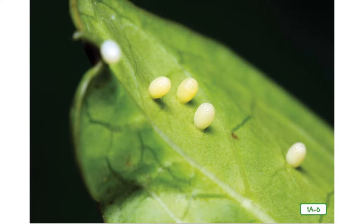Many insects depend on plants to live. Many insects eat plants, and some lay their eggs on plants. The plant on which an insect lays its eggs, and which provides food for its young, acts as a host and is called a host plant. A host is a plant or animal on which or in which another thing lives. Each host plant attracts different types of insects. Many insects have developed very specific diets and would die without their host plants.